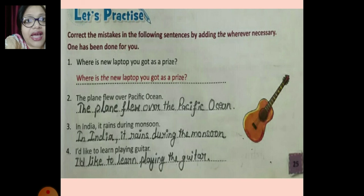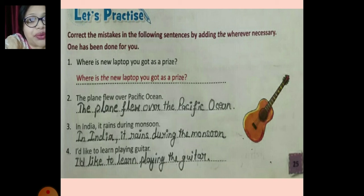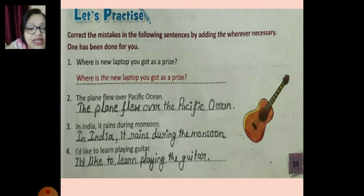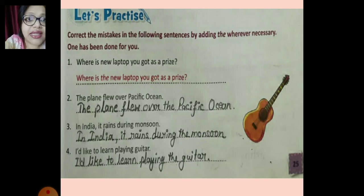Now, coming to the exercise on page 25 — this is your classwork. We have to correct the mistakes in the following sentences by adding 'the' wherever necessary. One has been done for you: 'Where is the new laptop you got as a prize?' The next sentence: 'The plane flew over the Pacific Ocean.'